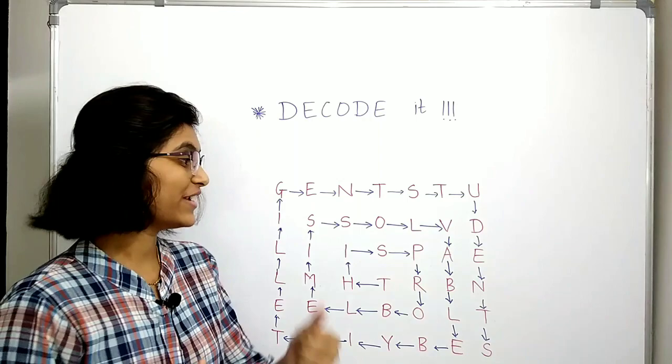And lastly we have the word 'students', right? So finally we have the pattern and the hidden message is: 'This problem is solvable by intelligent students.' I hope you find this useful. Thank you for watching this video.